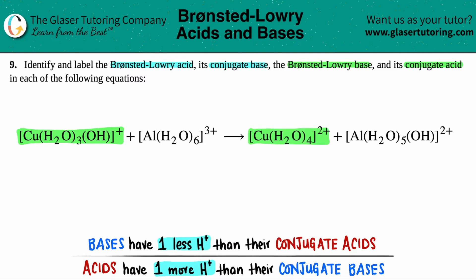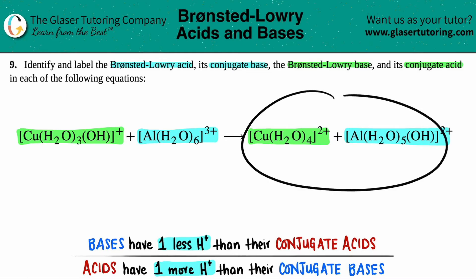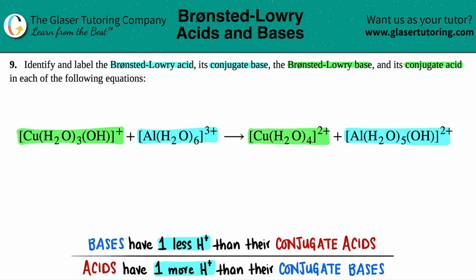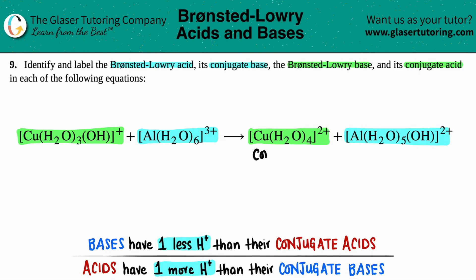If I picked correctly, the other one should make sense as well. This one has the aluminum, and this one has the aluminum, so they go together. Now, the easiest way is to get the word 'conjugate' out of the way. Conjugates are always going to be on the product side. Conjugate basically means the other part of the pair. So these products have to be conjugate somethings.